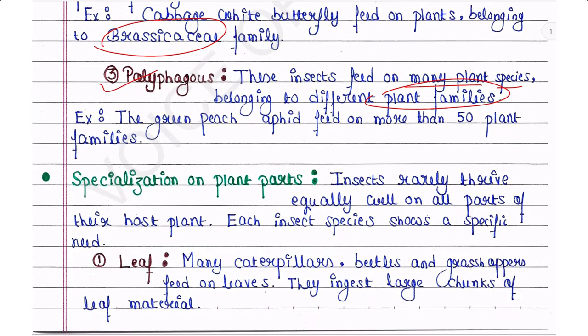Next is species specialization on plant parts. Insects rarely thrive equally well on all parts of their host plant; each insect species shows a specific need. The host plant contains leaf, root, stem, etc., but insects are not interested in all of them. Many caterpillars, beetles, and grasshoppers feed on leaves only — they ingest large chunks of leaf material.